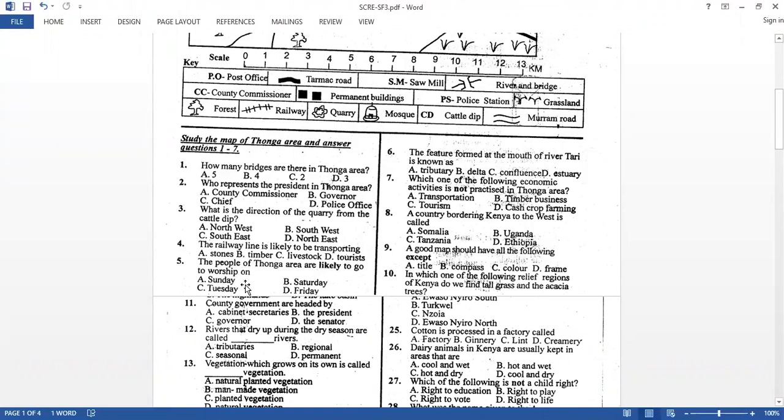The people of Thonga area are likely to go to worship on which day. Remember we have a mosque and Muslims mainly worship on Fridays. Christians mainly worship on Sundays, most of them. Then I don't know any religion that maybe worship on Tuesday. Some of the Christians also they worship on Saturday, but mainly most of them worship on Sunday. But in our case here, because we have a mosque, we will say that people in Thonga area mainly worship on Friday, because most of them are Muslims.